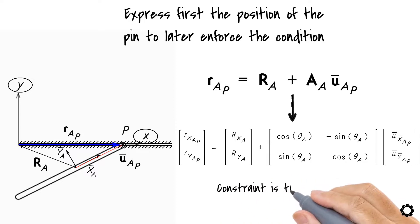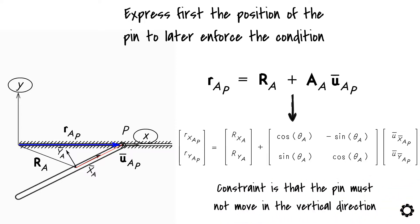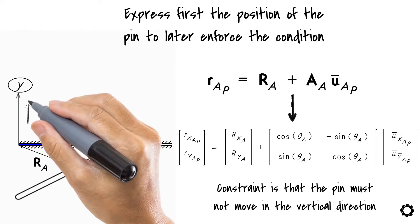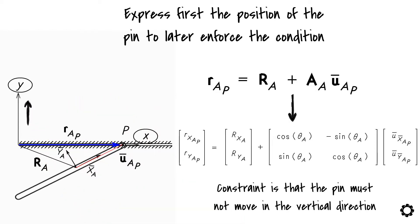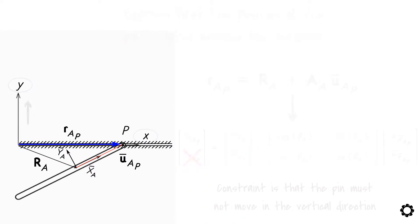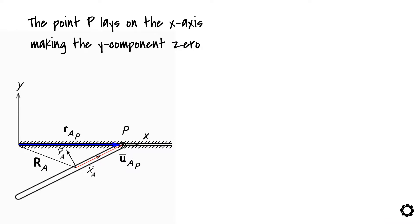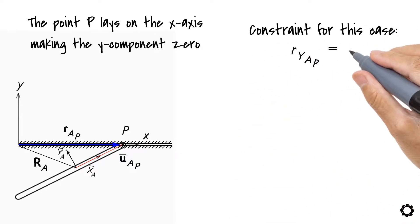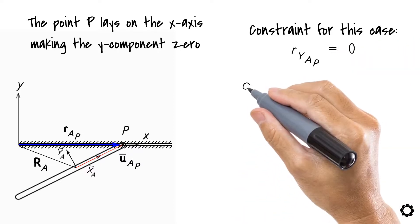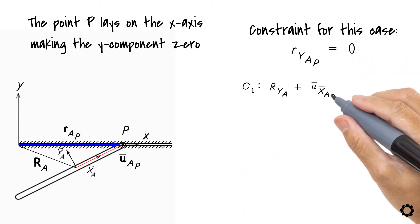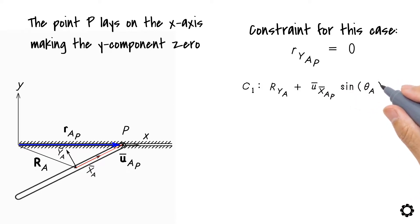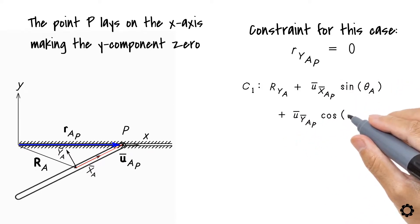Our constraint is that the pin must not move in the vertical direction. For us, this vertical direction would be directed along the y-axis. Basically, what we are saying is that there shouldn't be any component of the vertical vector in the y-axis. For the case presented in this system, the point P lays on the x-axis making the y-component zero. So our constraint for this case is R_Y_AP equals zero: C1 is R_Y_A plus U_bar_X_bar_AP sin(theta_A) plus U_bar_Y_bar_AP cos(theta_A) equals zero.